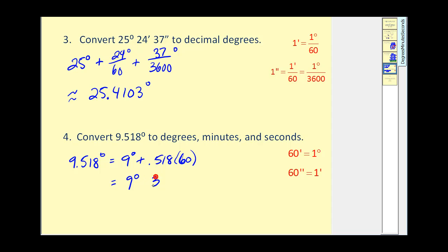But now we want to convert the decimal part of the minutes into seconds. Every minute equals 60 seconds. So we take 0.08 times 60 seconds. And this rounds to approximately 5 seconds.